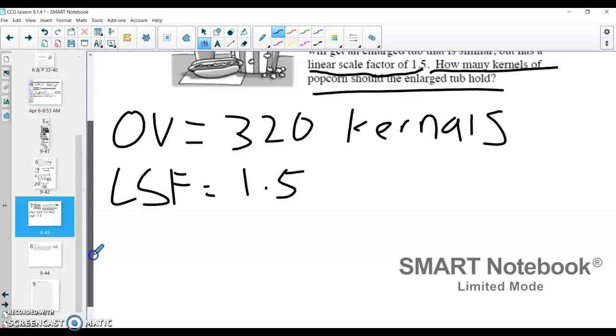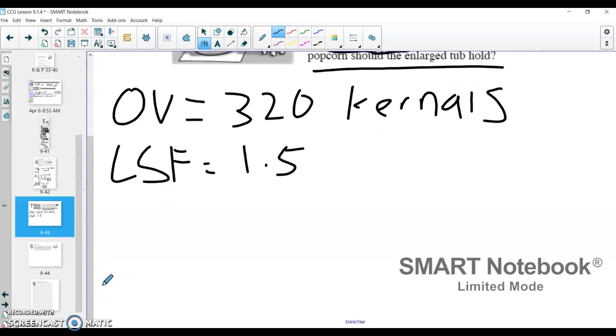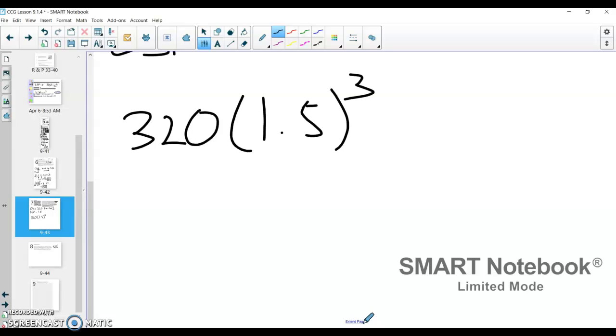Well, what we're going to do is similar to what we just did. We're going to take our original volume, 320 kernels, and we're going to multiply that by our linear scale factor cubed. And so 1.5 cubed. And if we do this, and I got to use my calculator here, we get 320 being multiplied by 1.5 times 1.5 times 1.5, which is really getting multiplied by 3.375.